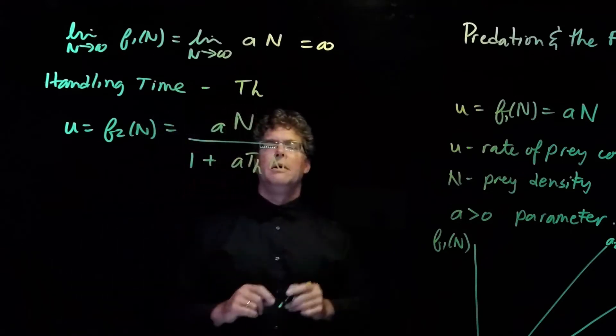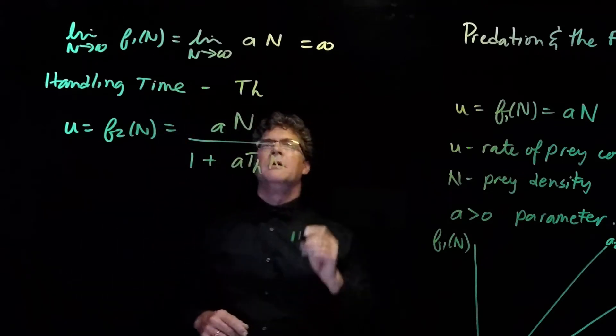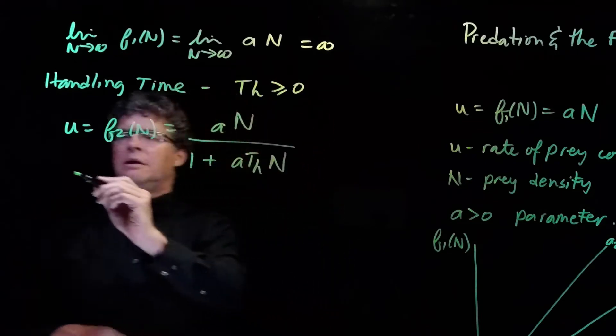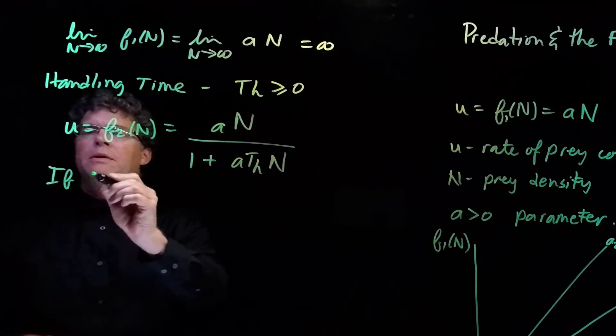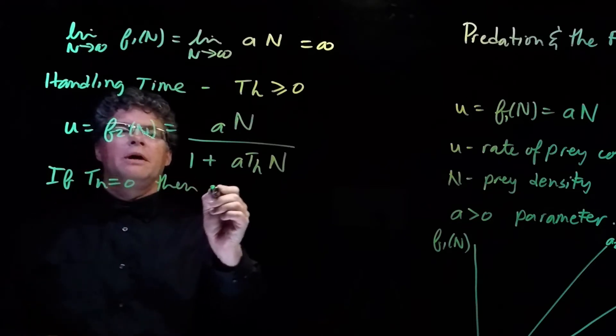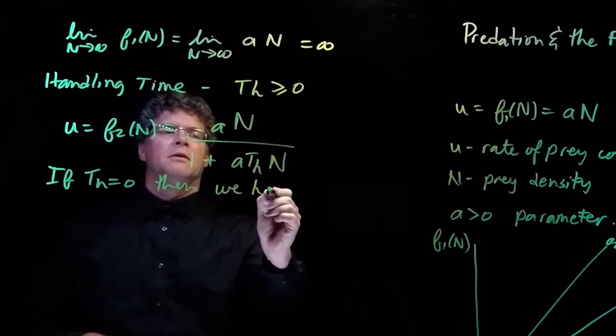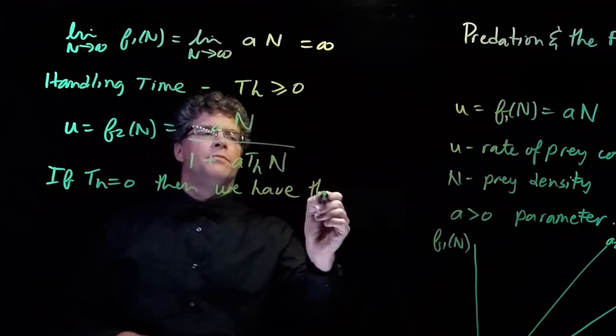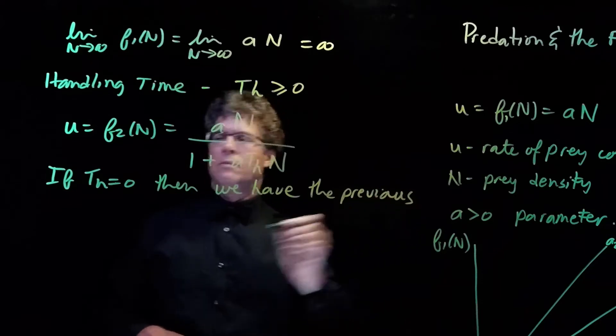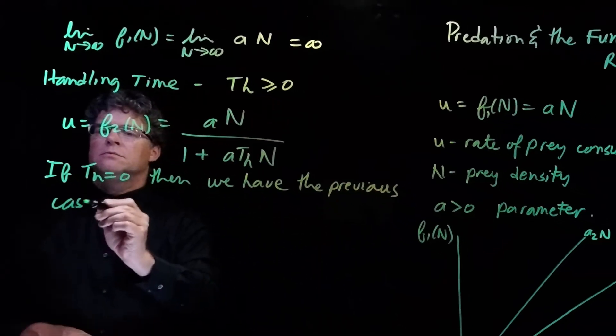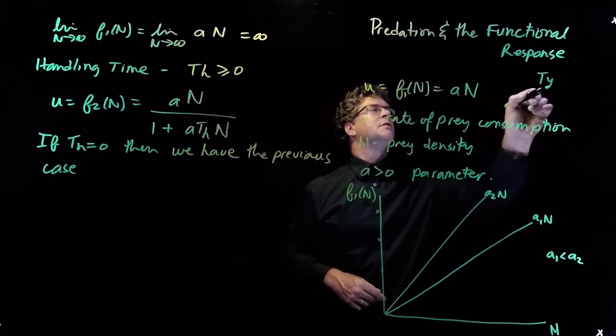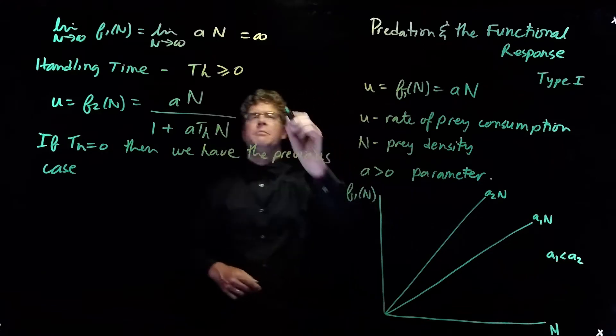So, the difference now is the handling time. The handling time, we say, is greater than or equal to 0. If the handling time is equal to 0, then we have the previous case. And biologists have called this a type 1 functional response, and this one a type 2.